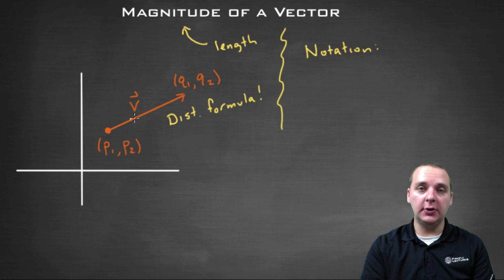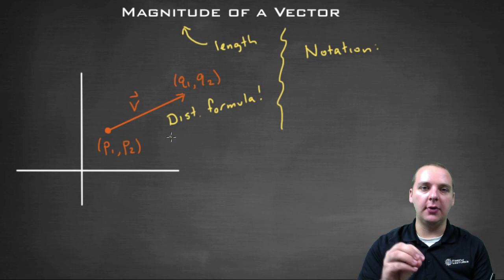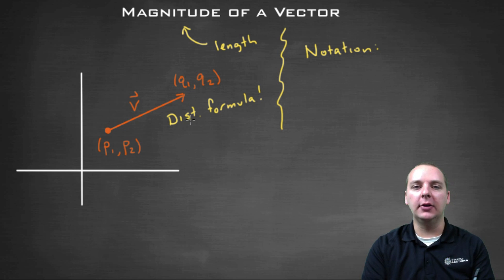To determine the length of a vector that has an initial point and a terminal point, basically all we're going to use is the distance formula. So let me show you the notation that we're going to use, and then I'll jot down the formula for the magnitude of a vector.